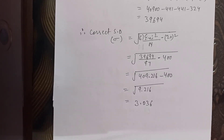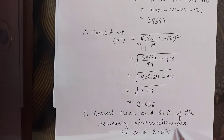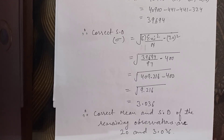Therefore, correct mean and standard deviation of the remaining 97 observations are 20 and 3.036. Thank you.